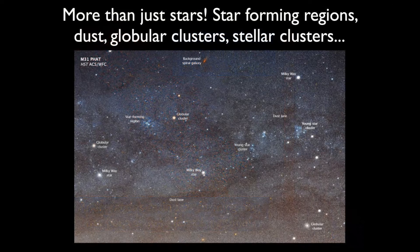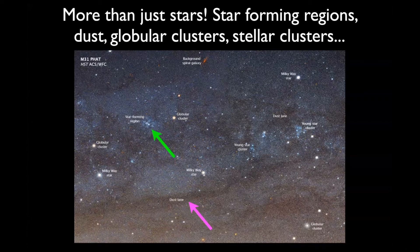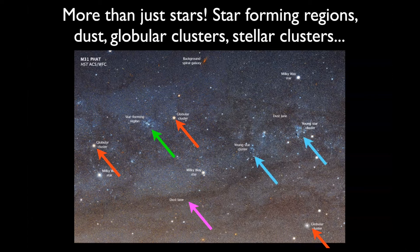Beyond just stars, in Andromeda we see other things: star-forming regions, dust lanes — this kind of diffuse feature that goes across the screen due to dust formed in the process of star formation that tends to obscure light — globular clusters, which are very compact clusters with like a million stars in a very small volume that formed in the very early universe, and young star clusters that are just forming today. The idea is that not only could we do science with individual stars, but we could learn a lot about just the other constituents of the galaxy.